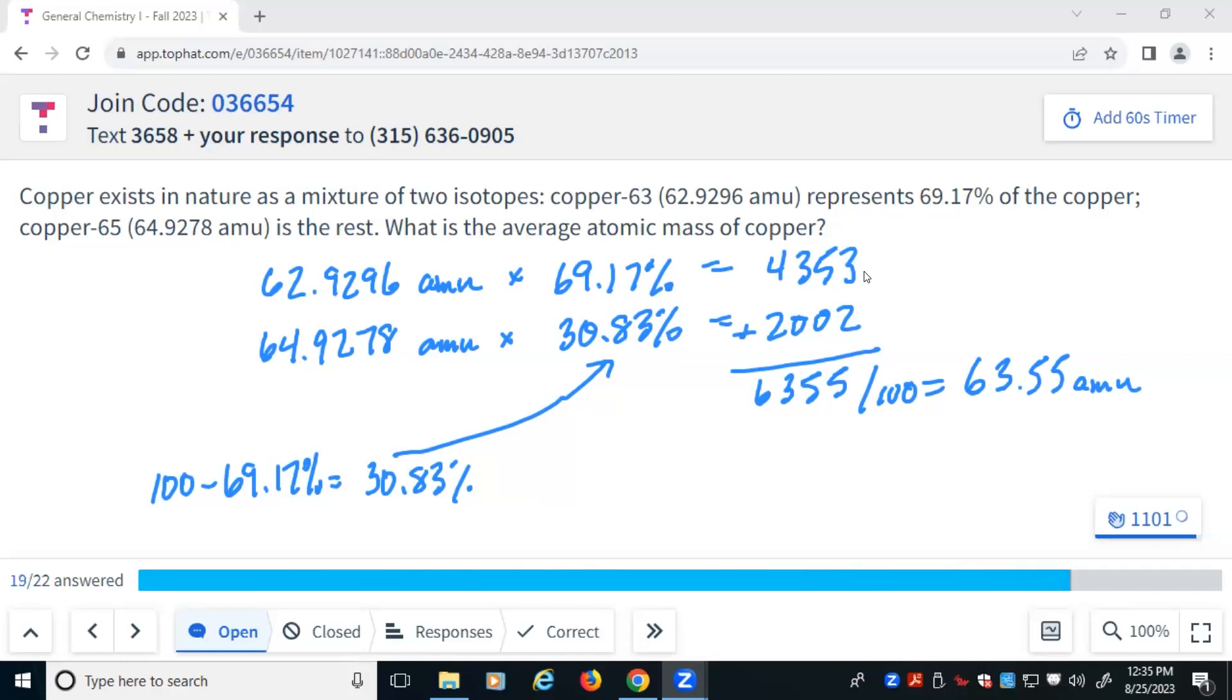That being said, everything else here kind of checks out. You add the two numbers together. In this case, both numbers are known to the exact same decimal place. They're both known to be the ones place. So the last digit in both cases was that digit. So I need to do no further rounding from there. I just need to divide by 100 to get rid of the percentages. And I get 63.55. AMU is the unit here.